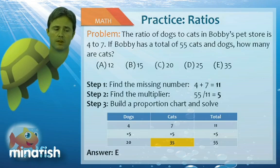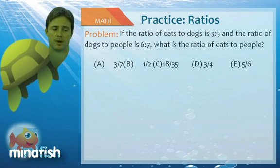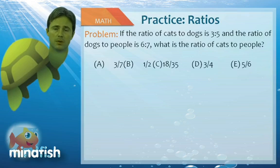Let's look at a practice problem involving the ratio ratio issue. If the ratio of cats to dogs is 3 to 5, and the ratio of dogs to people is 6 to 7, what is the ratio of cats to people? So again, we can't just say the answer is 3 to 7. We have to make the common term the same.